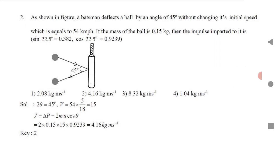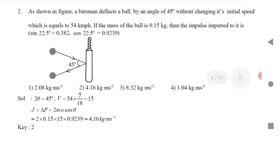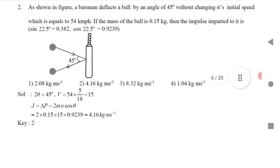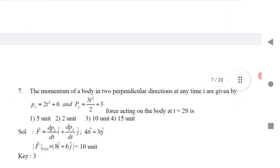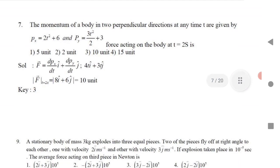Question 9: A batsman deflects a ball by an angle of 45 degrees without changing its initial speed of 54 km/h. Given the mass of the ball, find the impulse. Impulse equals change in momentum. The formula is 2mu cosθ. Substitute the mass, initial velocity, and angle directly to get the answer.